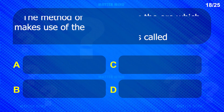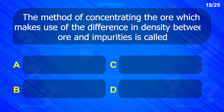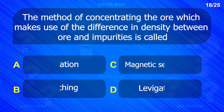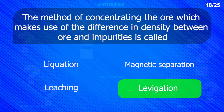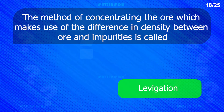The method of concentrating the ore which makes use of the difference in density between ore and impurities is called: Levigation.